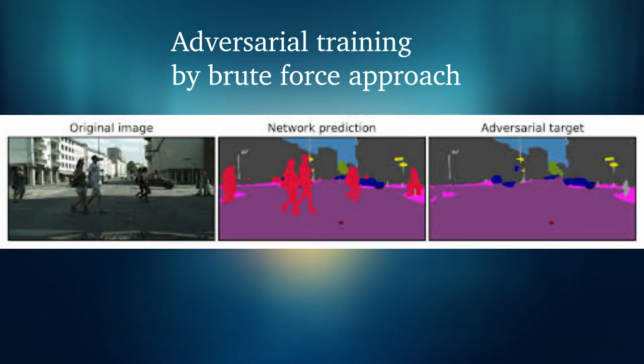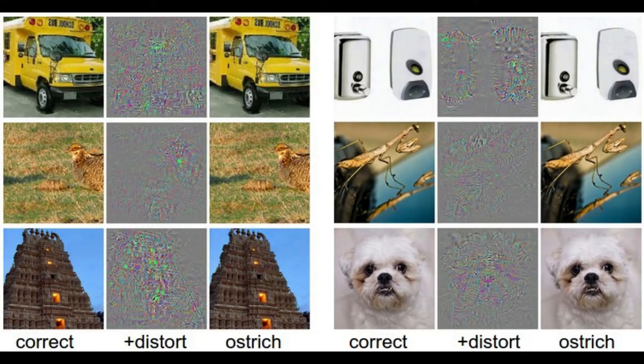Usually in adversarial training, we make use of brute force solution where we simply generate a lot of adversarial examples and explicitly train our models not to be fooled by each of them. So far, we have seen deep learning systems are broadly vulnerable to adversarial examples.